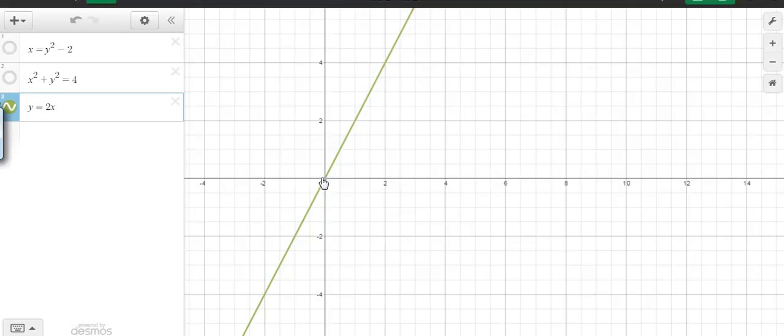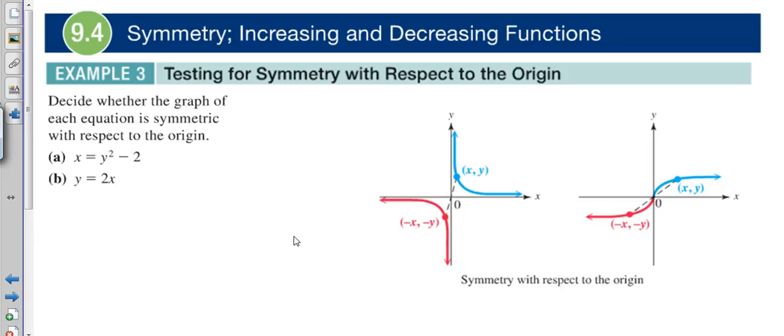If you look at this point (1,2), that means we should have the point (-1,-2), and we do, right here. Just following our pattern, this is what you should find if something is symmetrical with respect to the origin.